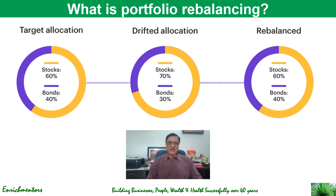Now, over a period of time and for a variety of reasons — as you will see in the next couple of slides — your stock allocation rises up to 70%. The reason could be that bond prices go down or stock prices go up. So your stock allocation drifts from the target of 60/40 to 70/30. Getting that back to the target allocation is what is called rebalancing — bringing the portfolio back to 60% stocks and 40% bonds.